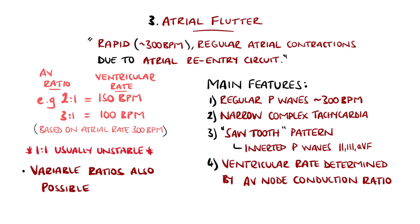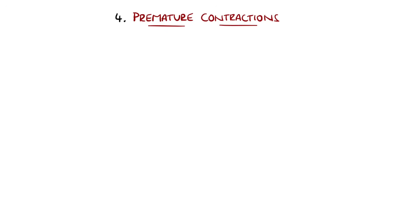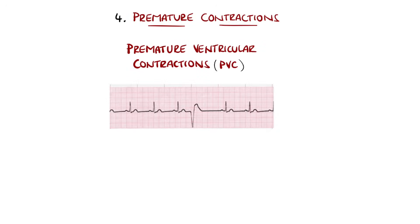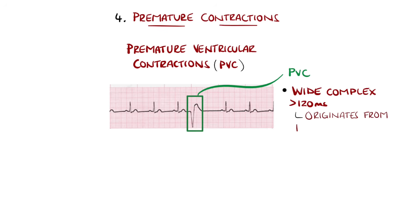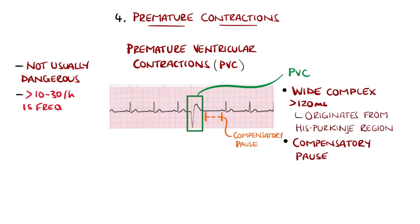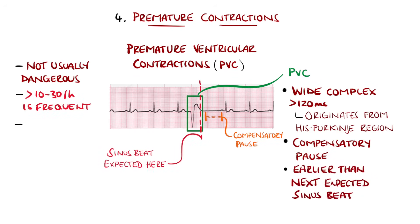Now we have premature contractions, which are extremely common findings on ECGs. Premature ventricular contractions, or PVCs, are beats that originate from the His-Purkinje region of the conduction system, and therefore appear as wide complex beats above 120 ms in duration. There is then a compensatory pause before the next beat. Although they can be felt as palpitations, they are rarely dangerous alone, unless they are frequent — defined as over 10 to 30 per hour — and if happening every other beat are described as bigeminy.